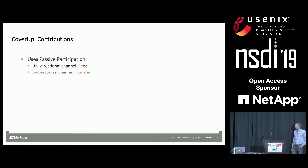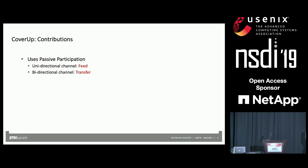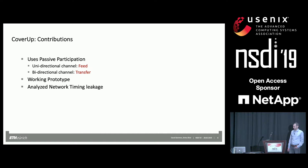Now we know a bit about passive participation. Cover-Up's primary contributions are: we use passive participation to create two channel types. One is a unidirectional extension we call the feed — think of it like a radio broadcast where the broadcaster doesn't know who is listening. We then modify the feed to produce a bidirectional general-purpose upload and download channel called transfer. We implement both into a fully working prototype and additionally analyze side-channel timing leakage to determine whether a network-level adversary can distinguish between active and passive participants.